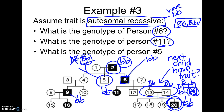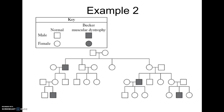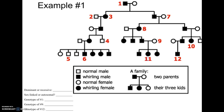So that is an example of a pedigree where they tell you what kind of trait it is. Now, the harder one is if they don't tell you what kind of trait it is. The first thing I would suggest you do is to try to figure out if the trait is dominant or recessive.